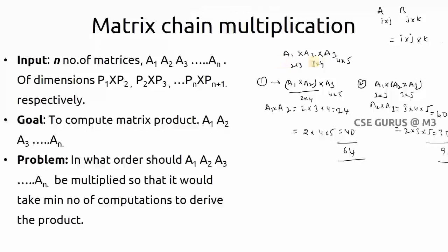Comparing the two: 64 versus 90. So multiplying A1 and A2 first, then multiplying the resultant with A3 is preferable. This gives the fewer computations. But if we have n matrices in the question, we need dynamic programming to determine which two matrices to multiply first.